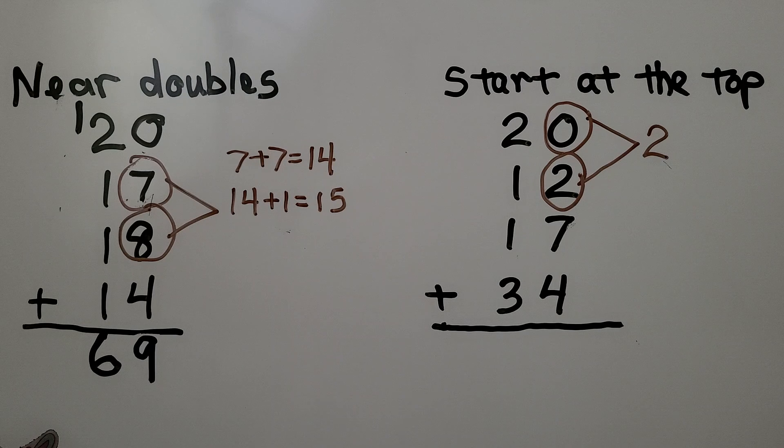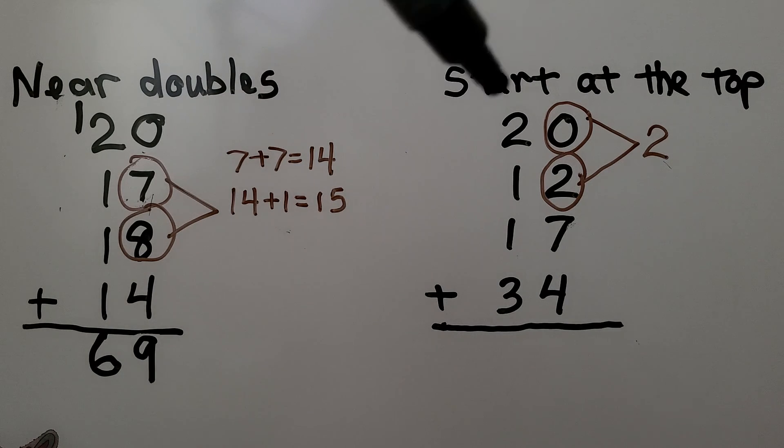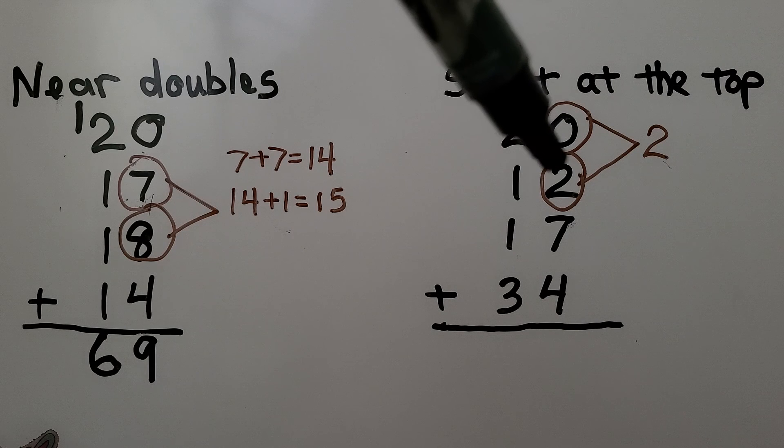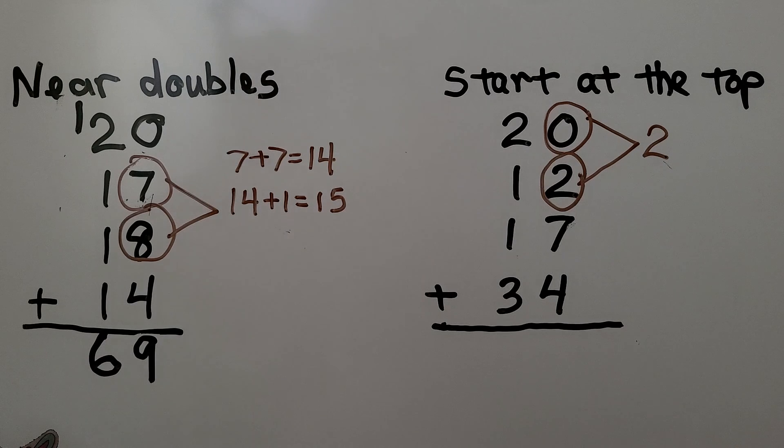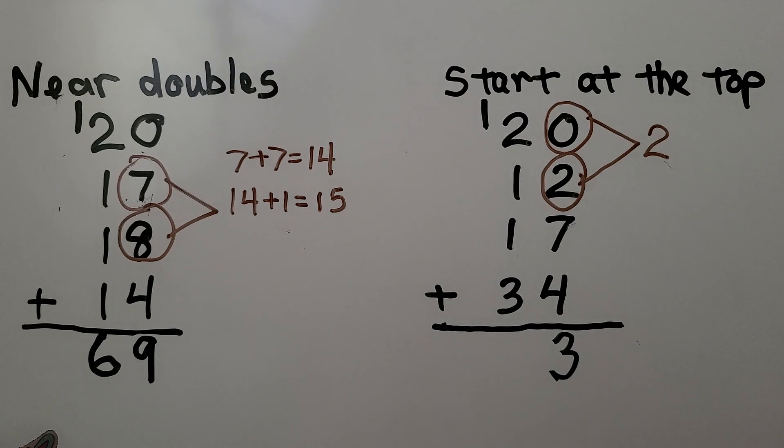We could also start at the top and just add going down the column. 0 plus 2 is 2, plus 7 more is 9, plus 4 more is 13.